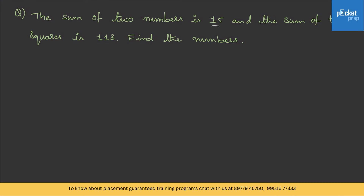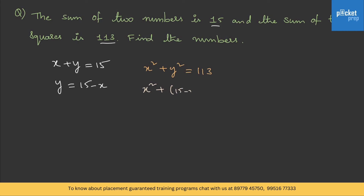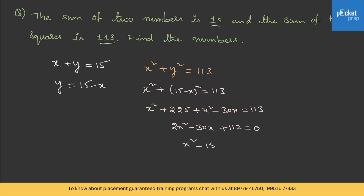Find the numbers. Let the two numbers be x and y. The sum of their squares, x² + y² = 113. Substituting y = 15 - x: x² + (15 - x)² = 113, which gives x² + 225 + x² - 30x = 113. That simplifies to 2x² - 30x + 112 = 0, or x² - 15x + 56 = 0, which factors as (x - 7)(x - 8) = 0.